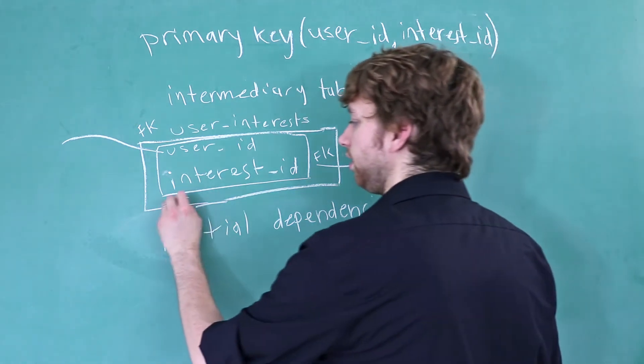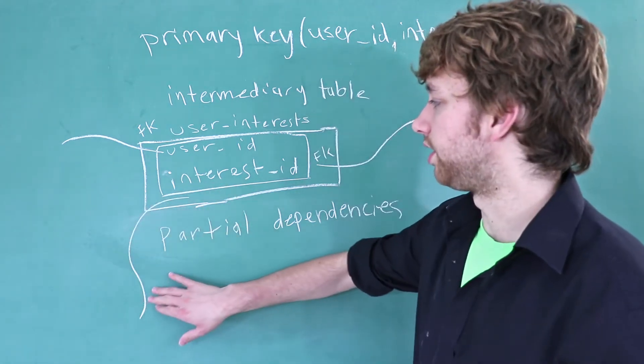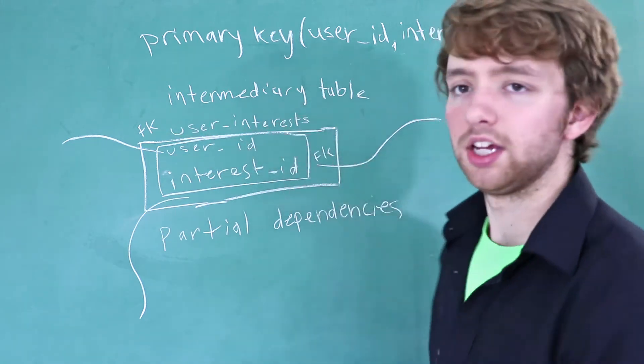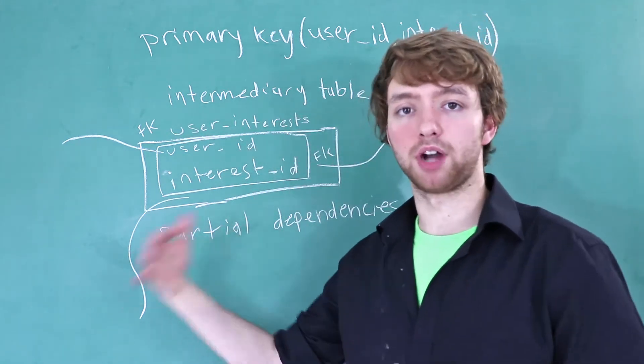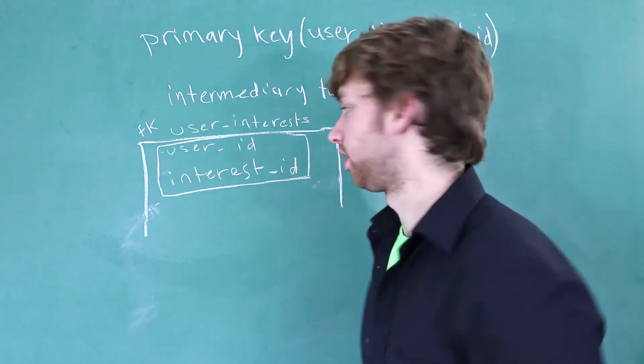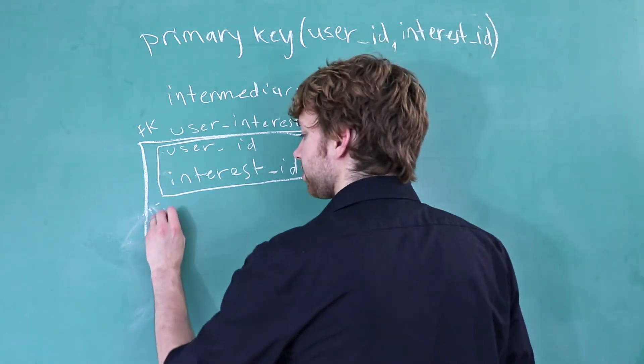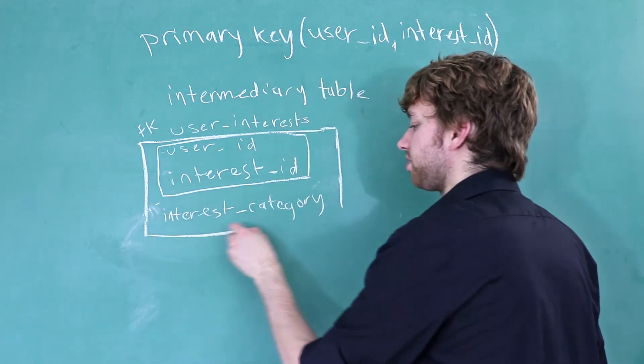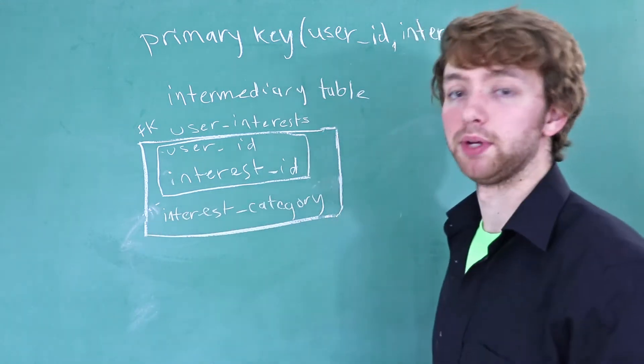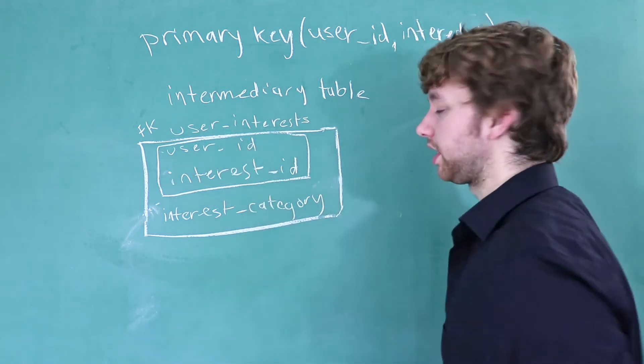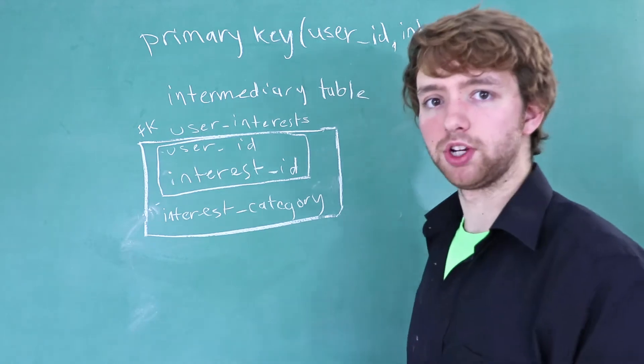But that column only really describes the interest section and not the user ID. It only describes part of that primary key. So let's say these interests have categories. We could say in here, interest category. And when we do this, we introduce a partial dependency in our database. Because if you think about this, the user really doesn't matter at all in this situation.